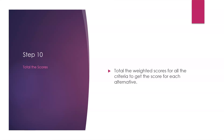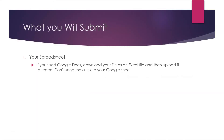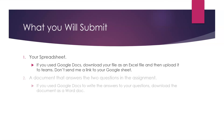Step ten: total the weighted scores for all criteria to get the score for each alternative. Step eleven: answer the assignment questions in a separate document. Step twelve: submit your assignment through Teams. Submit your spreadsheet — if you're using Google Sheets, download the file as an Excel file and upload it to Teams; don't send a link to your Google Sheet because permissions issues cause a lot of follow-up. Also submit a document answering the two or three questions in the assignment. If you use Google Docs, download it as a Word doc before uploading. That's all that's involved in the Weighted Mean Project.